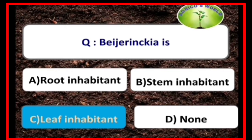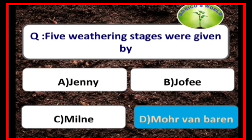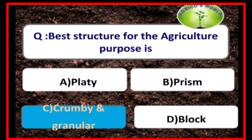Bejorinia is a leaf inhabitant. Five weathering stages were given by the scientist Mohr and Bannon.